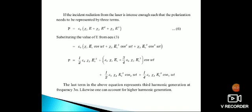If the incident radiation from the laser is intense enough such that the polarization needs to be represented by three terms: P = ε₀(ψ₁E + ψ₂E² + ψ₃E³), then P = ε₀ψ₁E₀ cos ωt + ψ₂E₀² cos² ωt + ψ₃E₀³ cos³ ωt.